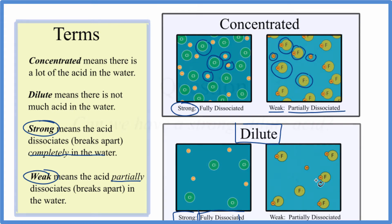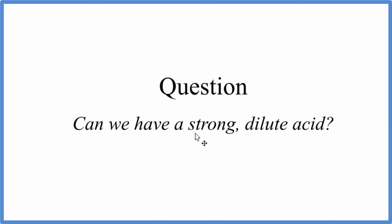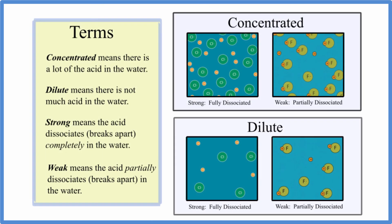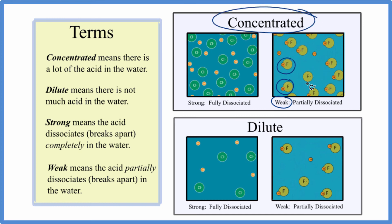Give this a try — pause and think about this question. The answer is yes. We can have a strong acid that's fully dissociated, there's just not much of it, so it's dilute. Conversely, we could have a weak acid where most of it's still together and hasn't dissociated — that would be concentrated because there's a lot of the acid dissolved in the water. This is Dr. B with the difference between strong and concentrated acids.